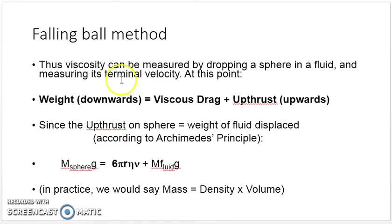The falling ball method involves a small spherical ball having considerable weight. This ball is allowed to fall through a column of liquid. The viscosity can be measured by the weight, viscous drag, and upthrust the liquid offers to the falling ball.